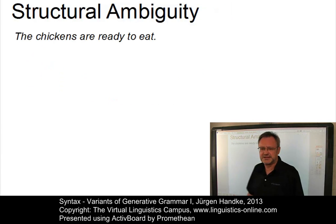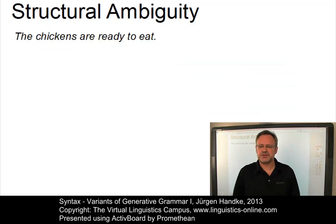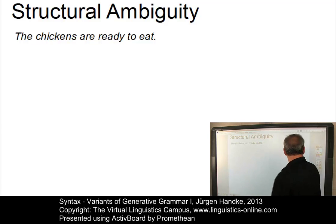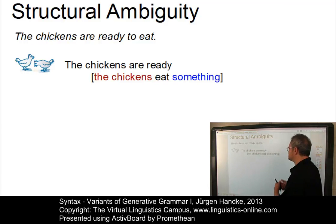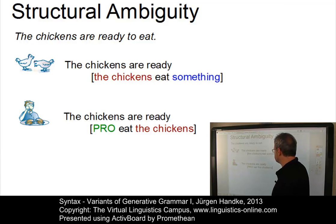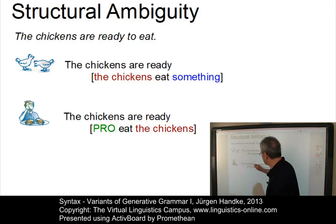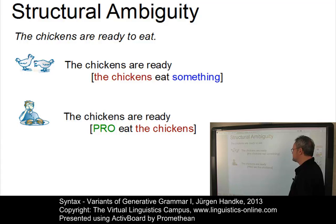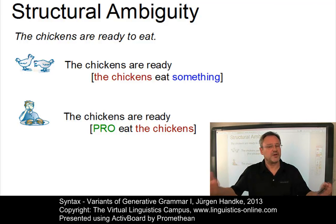Another example concerns cases of structural ambiguity. In sentences such as 'the chickens are ready to eat,' a simple phrase structure grammar would have to show the differences in meaning via two syntactic trees – two different embedded clauses. In the first interpretation, the chickens eat themselves: the embedded clause exhibits the chickens as the subject of eat. In the second interpretation, the chickens are ready to be eaten: an external element 'pro' eats the chickens, and the chickens are the object of the embedded clause. A phrase structure grammar cannot handle this phenomenon suitably unless we expand it.